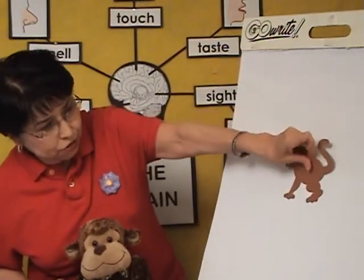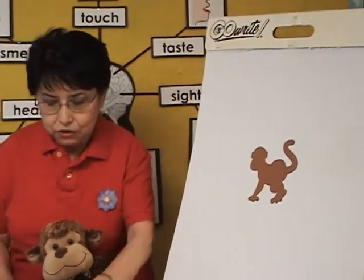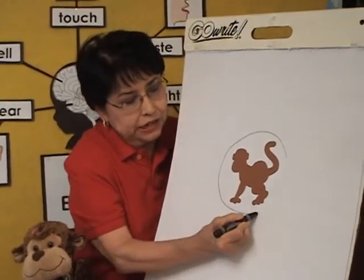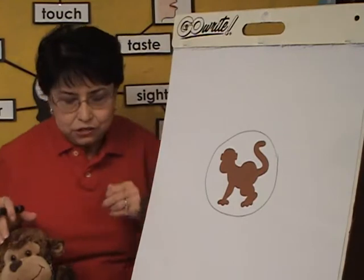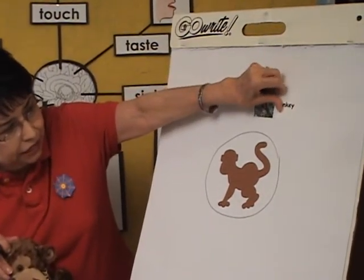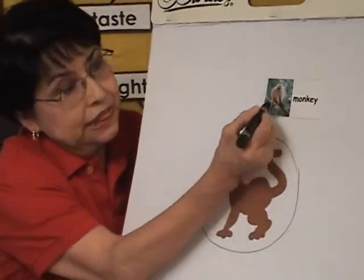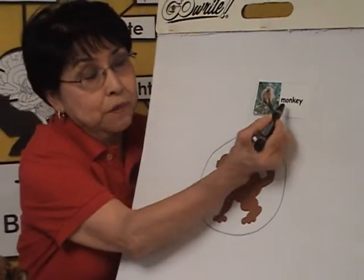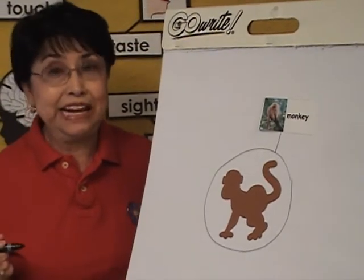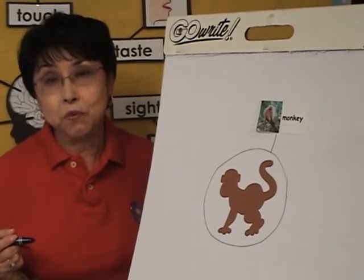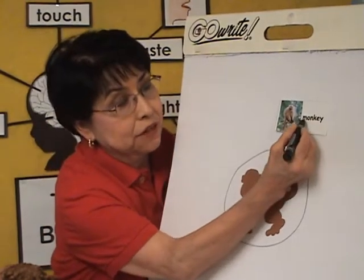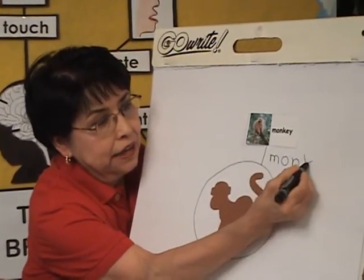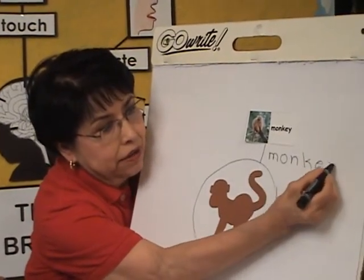Now that I've introduced my novelty and all the children said 'monkey,' I'm going to put 'monkey' on my chart. This is an outline of a monkey — you can also show a picture of a monkey. I'm going to draw a line around it because I always tell the children we're going to do a diagram. Now I'm going to connect the word 'monkey' to print. I'll sound out each letter as I write it: M-O-N-K-E-Y — monkey.